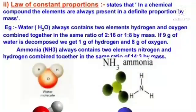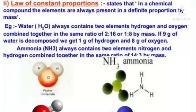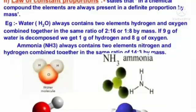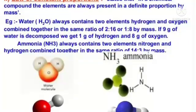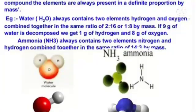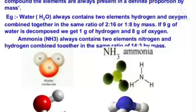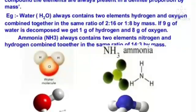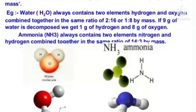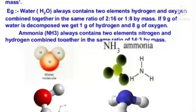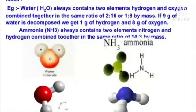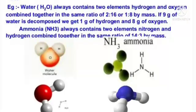Law of constant proportions states that in a chemical compound the elements are always present in a definite proportion by mass. Example: water always contains hydrogen and oxygen combined in the same ratio of 2:16 or 1:8 by mass. If 9 grams of water is decomposed, we get 1 gram of hydrogen and 8 grams of oxygen. Ammonia always contains nitrogen and hydrogen combined in the same ratio of 14:3 by mass.